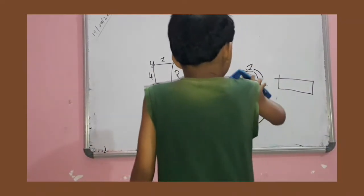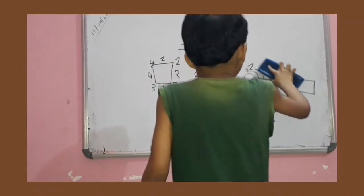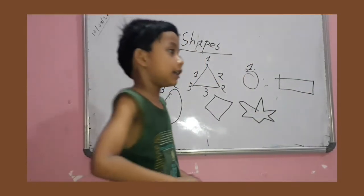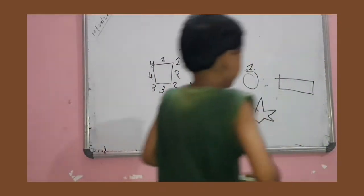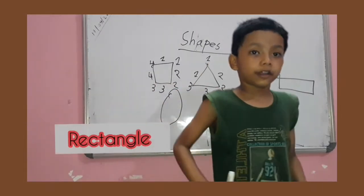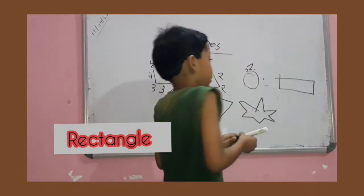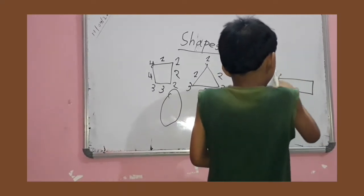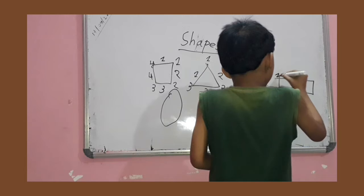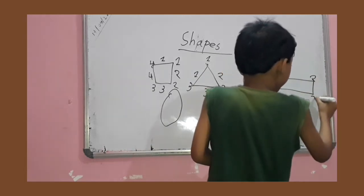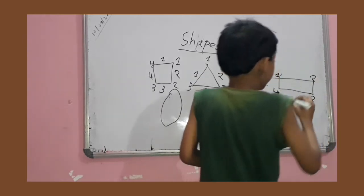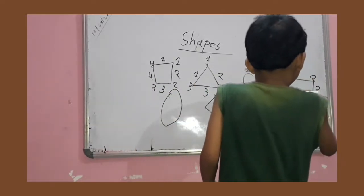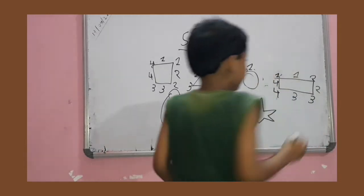Okay, next shape. This is a rectangle. Do you know a rectangle? How many points and how many sides? Look. Come on again. One, two, three, four. Four sides. And one, two, three, four. Four sides.